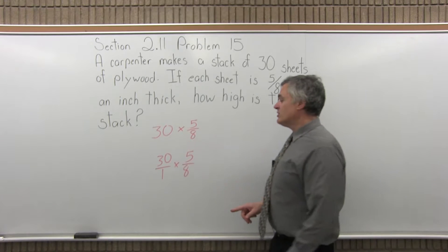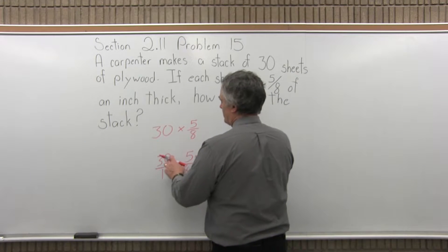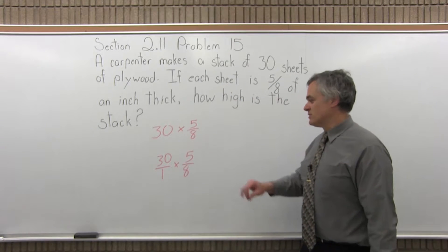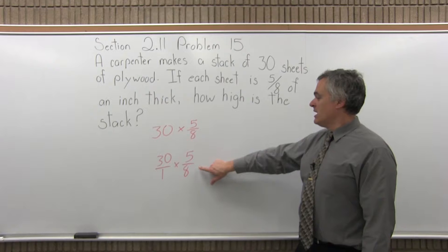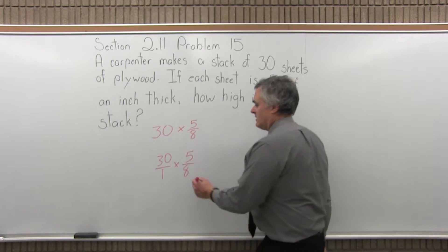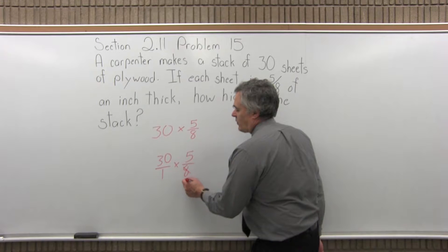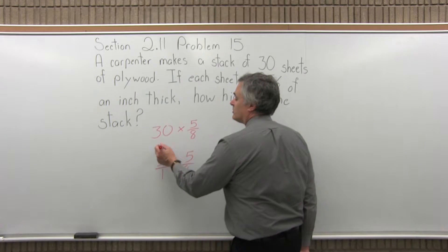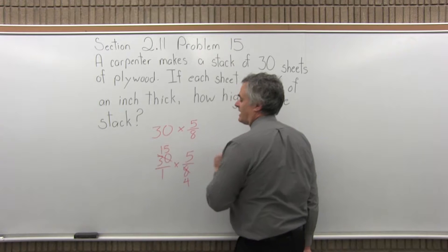Or if you notice, you can pre-reduce a little bit. The 5 doesn't really work, the 5 and the 30 reduce, but they're both on the top. You can't pre-reduce those. One has to be on the top and one on the bottom. But the 8 and the 30 can at least both be cut in half. 2 goes into 8 4 times, 2 goes into 30 15 times.